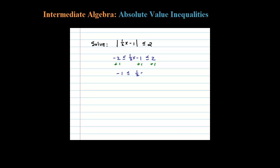I suppose I could divide by 1/2, but I'm going to multiply everything by 2. That'll leave me with negative 2 is less than or equal to X less than or equal to 6. So this is telling me any number in between negative 2 and 6 should solve the original inequality.